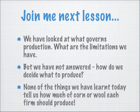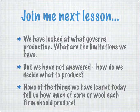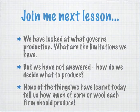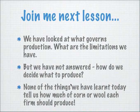Join me in the next lesson. We have only looked at what governs production and the limitations firms face — they have limited resources. But we have not answered how we decide what to produce and how much to produce. Nothing we learned today tells us how much corn or wool each firm should produce. These are actually the important unanswered questions in economics: how to produce, how much to produce, and what combination of goods and services to produce. That brings in another dimension of microeconomics — the consumption function.